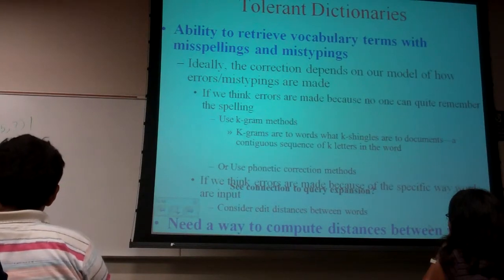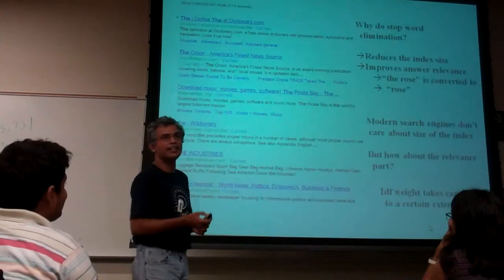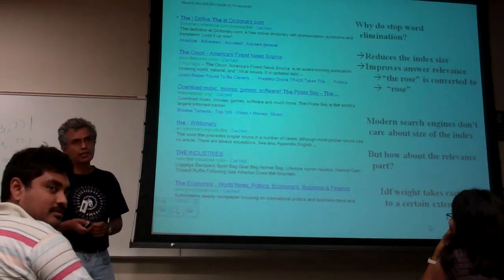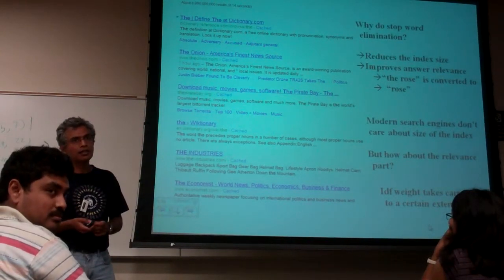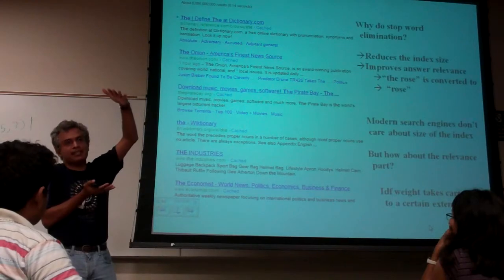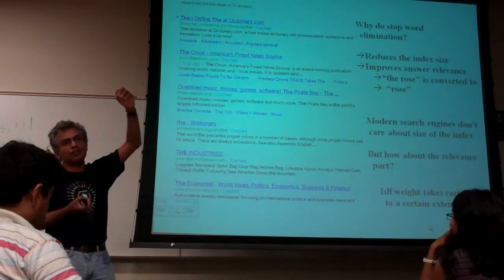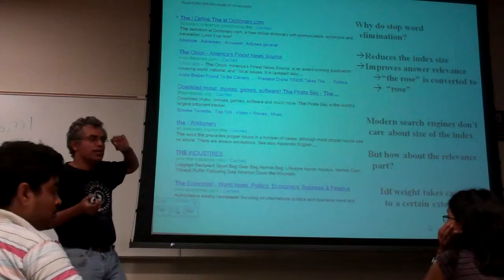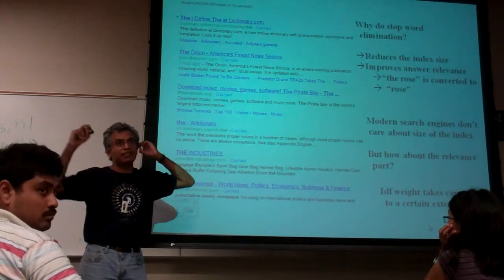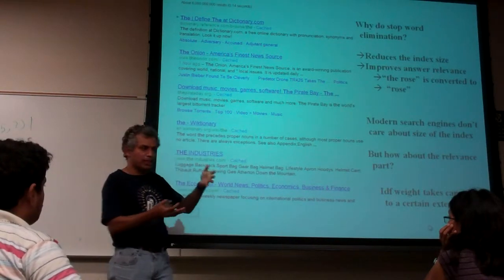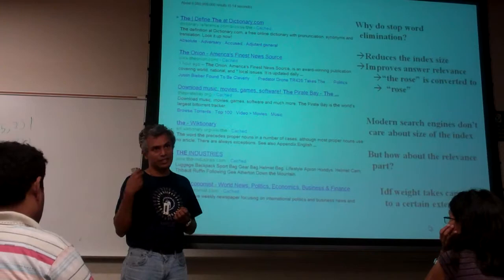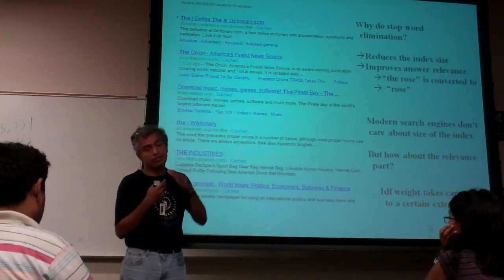There's a question on the previous topic about the inverted index slide with data factors — how we calculated term frequency. To compute term frequency correctly, you need the maximum of the term frequencies of all the terms in that document. So you need one more entry for each document, which is the maximum term frequency. For each document, you should know what its maximum term frequency is for any of the terms, because that's how you normalize.